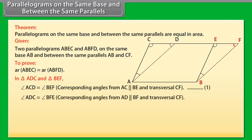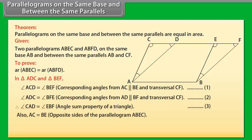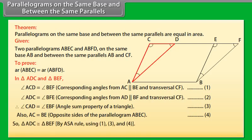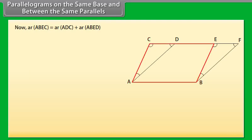In triangle ADC and triangle BEF: angle ACD equals angle BEF because these are corresponding angles from AC parallel to BE and transversal CF — mark it as 1. Angle ADC equals angle BFE because these are corresponding angles from AD parallel to BF and transversal CF — mark it as 2. Therefore, angle CAD equals angle EBF by angle sum property of a triangle — mark it as 3. Also, AC equals BE as opposite sides of parallelogram ABEC — mark it as 4. So triangle ADC is congruent to triangle BEF by ASA rule using 1, 3 and 4.